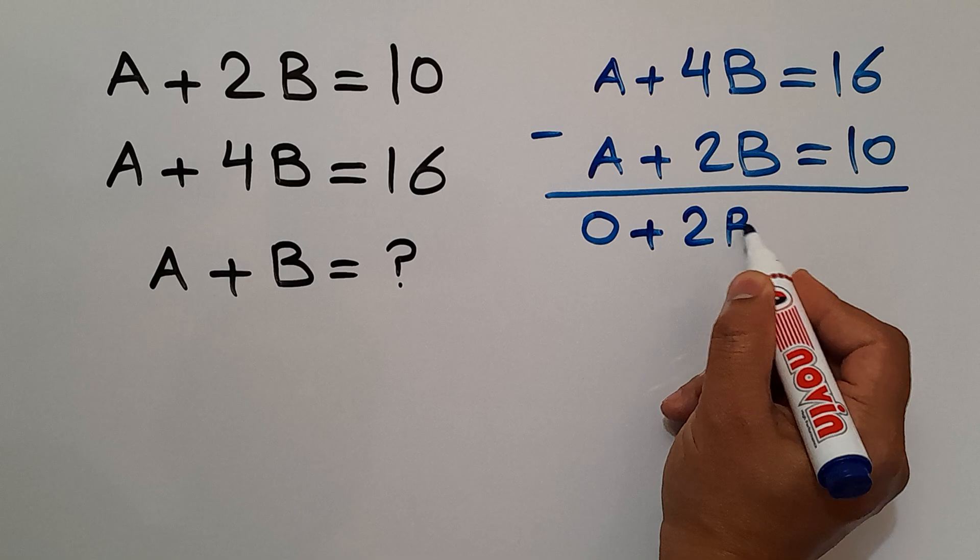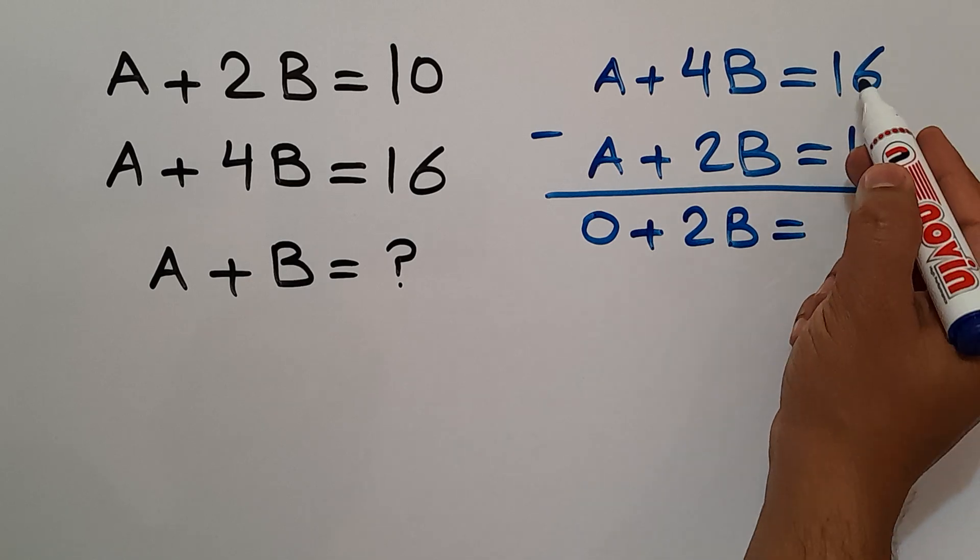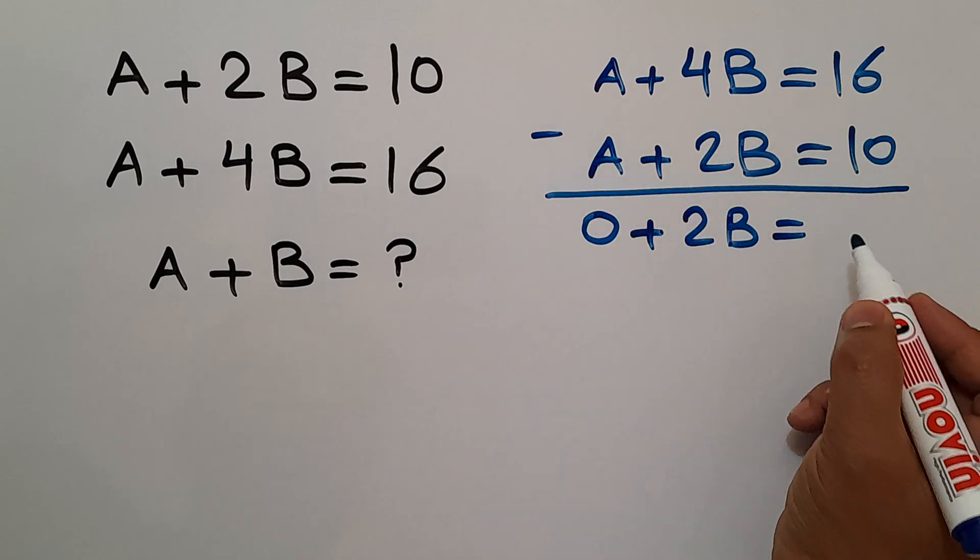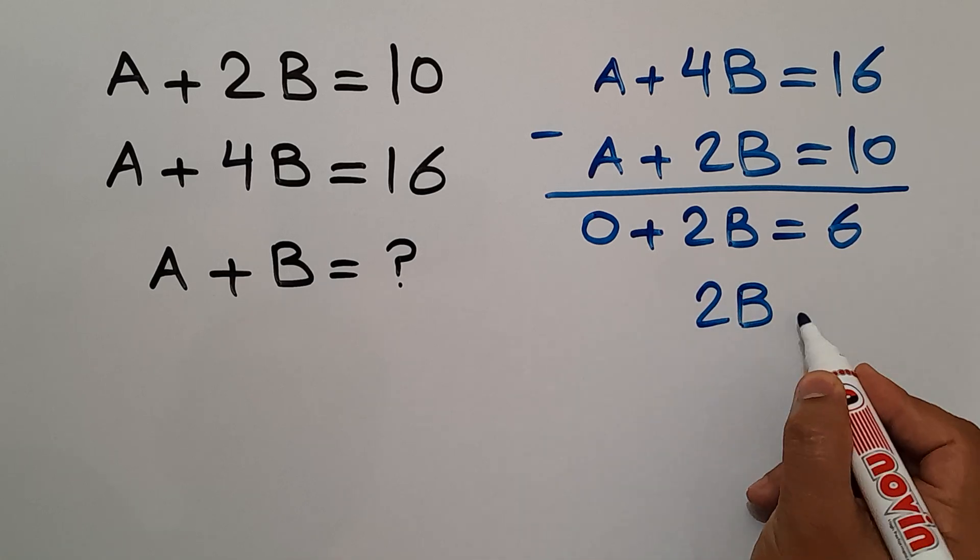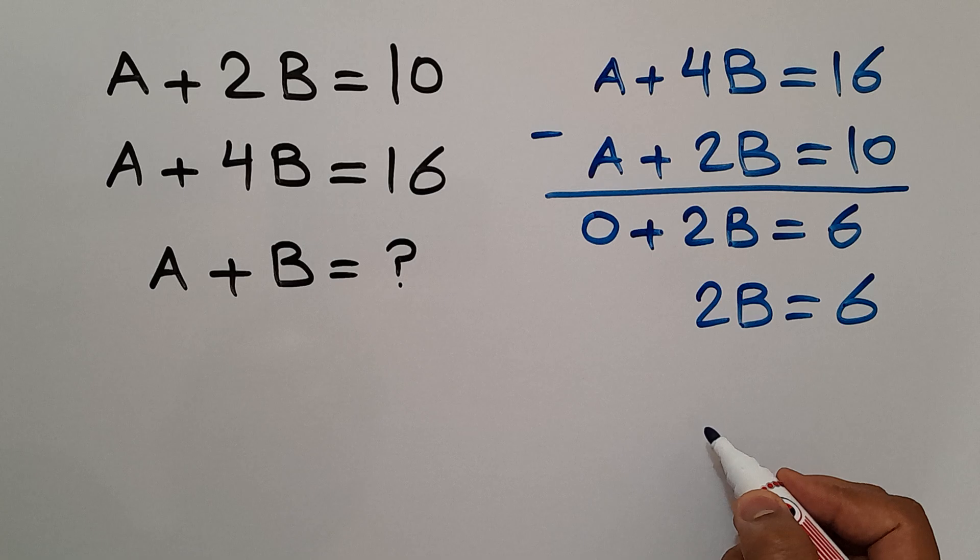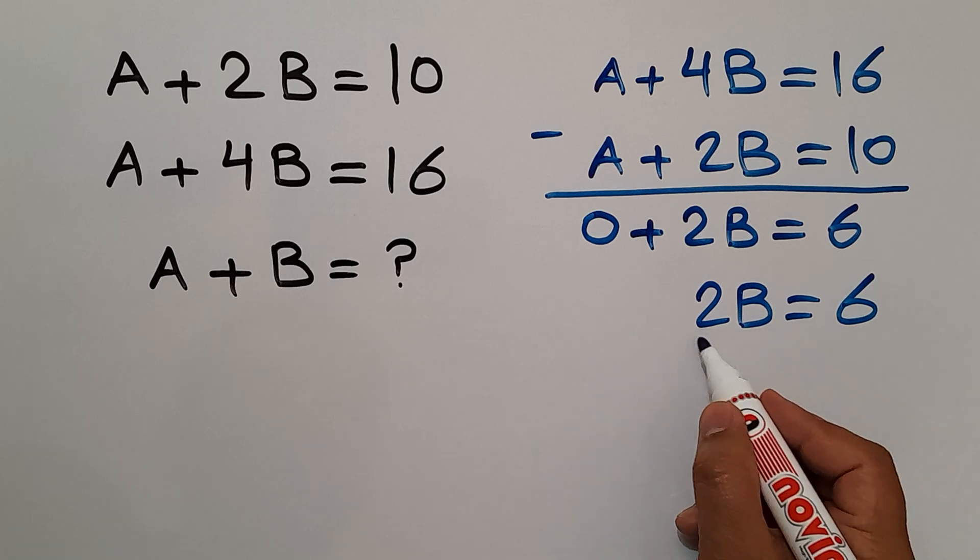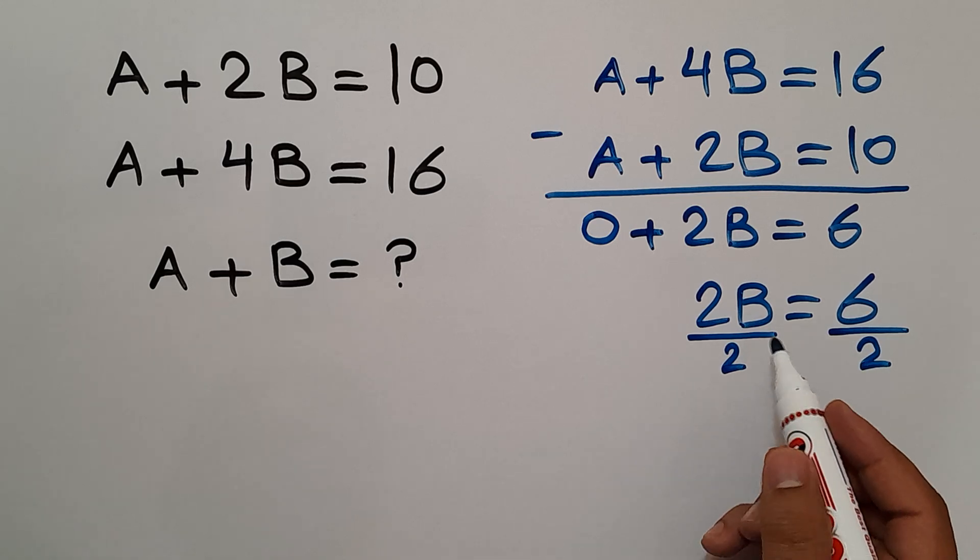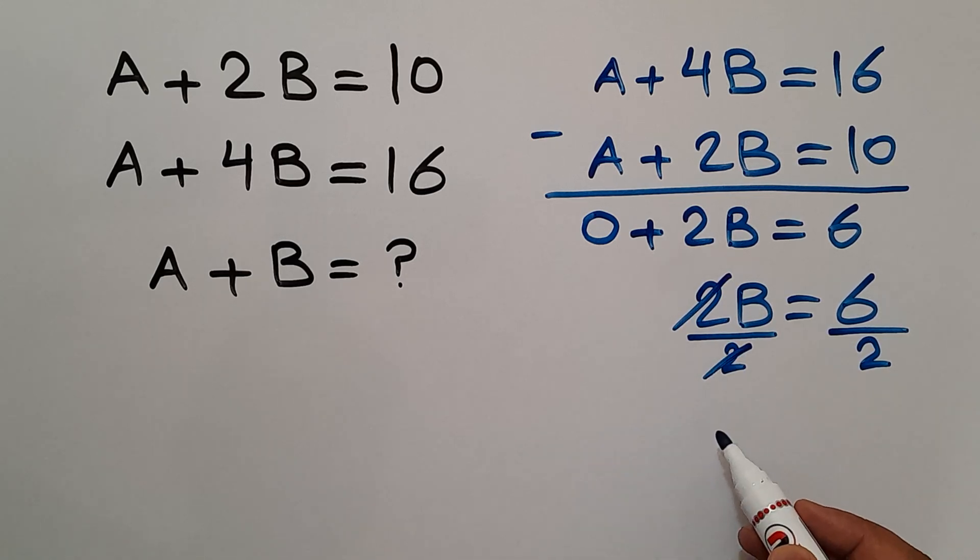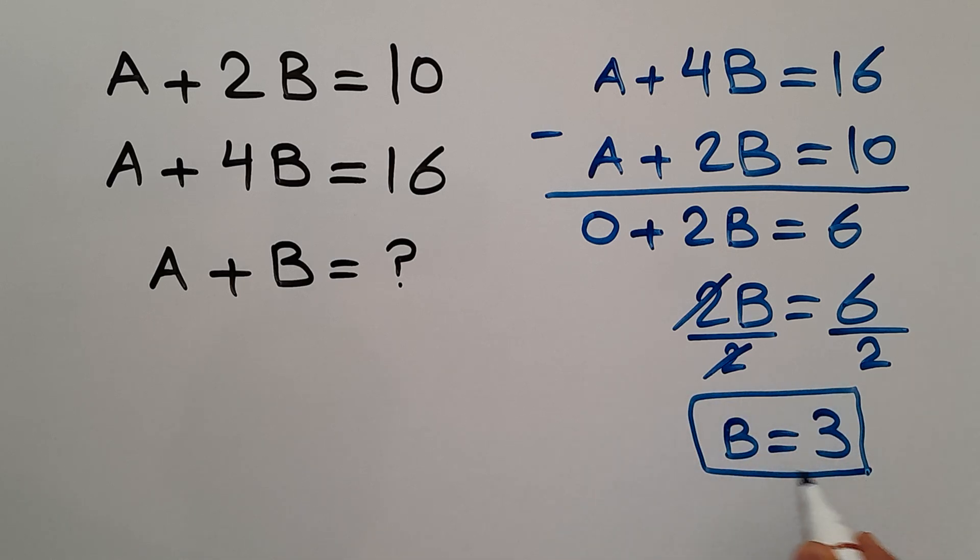Okay, so we have 2B equals 6. Now let's divide both sides by 2. Divided by 2 and divided by 2. We can easily cancel these two and these two, so we have B equals 6 divided by 2 which equals 3. So the final value for B is 3.